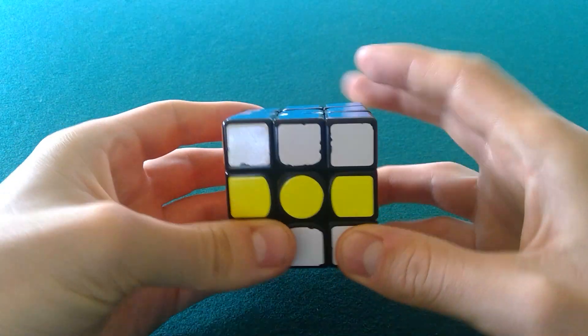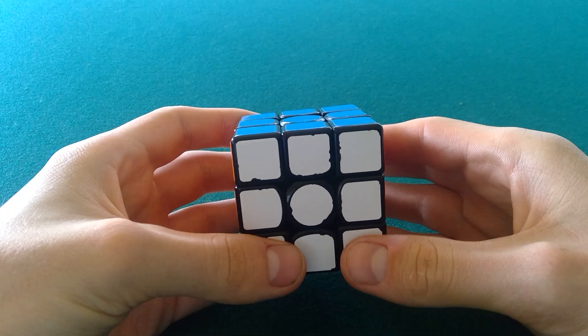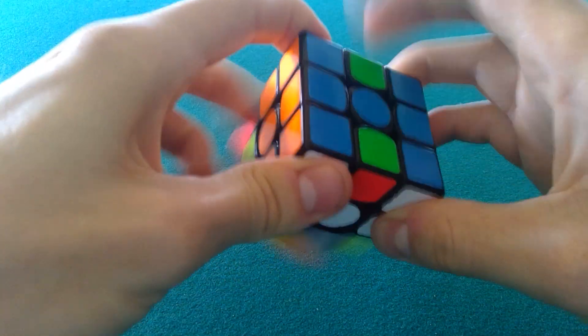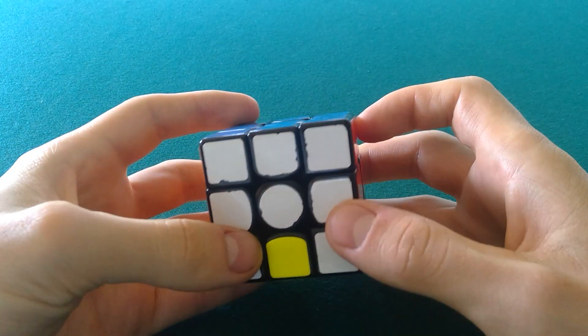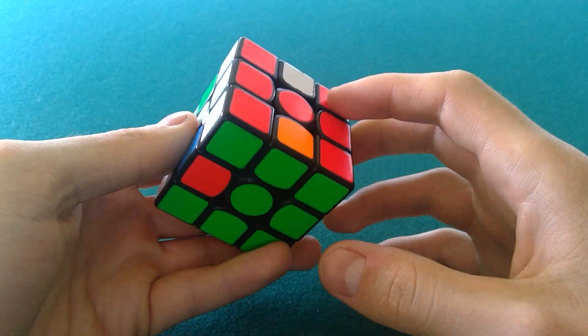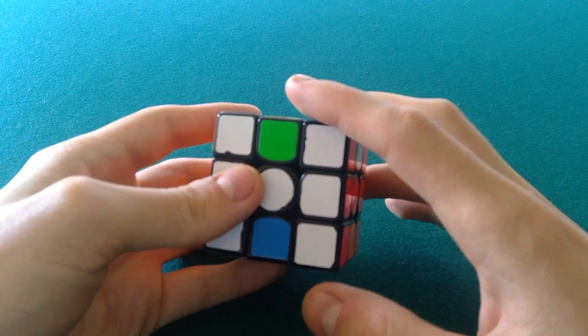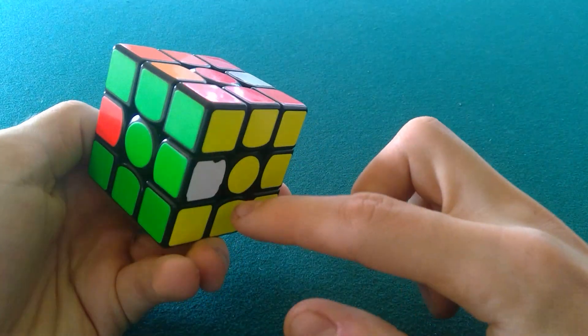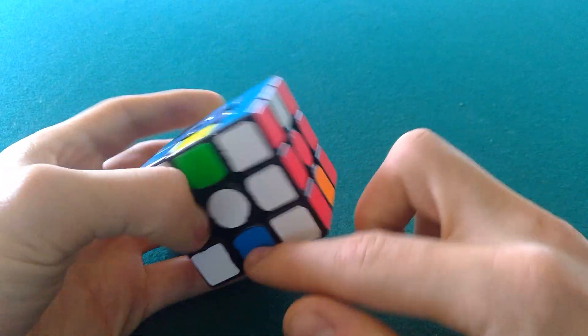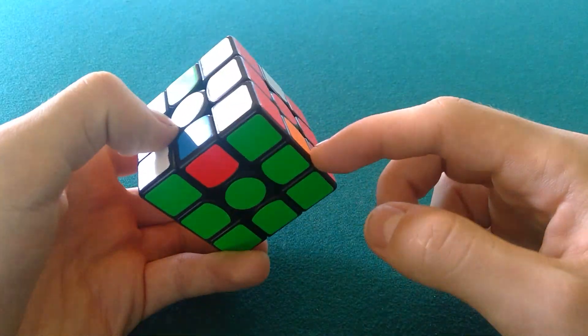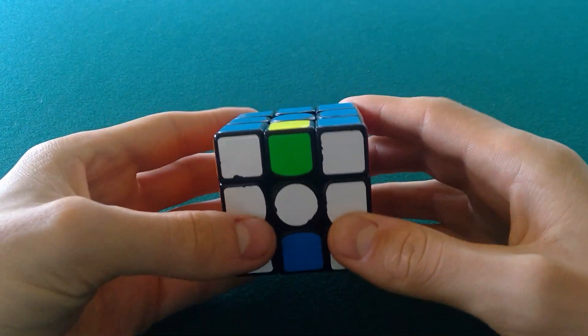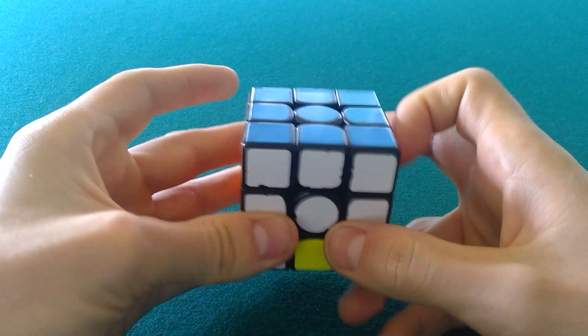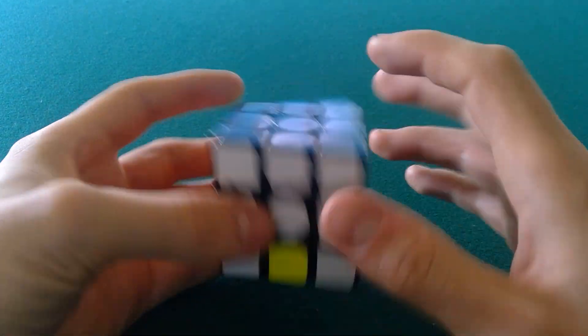Or if you have an H perm on the bottom and then you have one comm to set up to the H perm, so instead of going here, here, here, and here, and then either doing 2E2E or more cycle breaks, you could just do one comm to set up to the H perm.